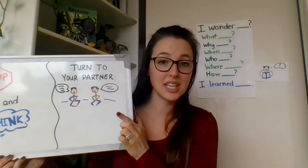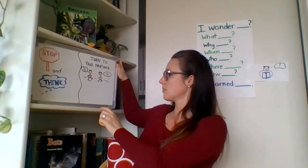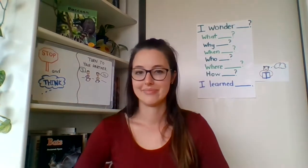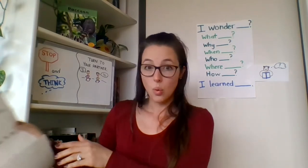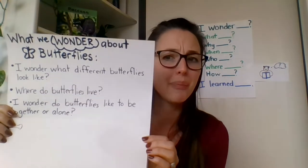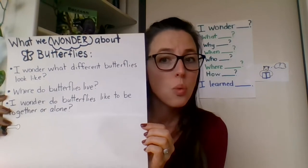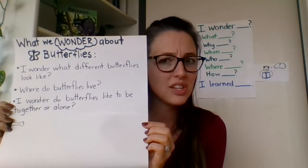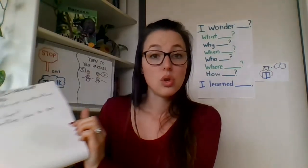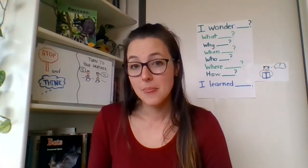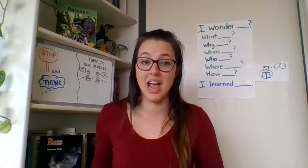Using your sentence stems, go ahead and share with your partner what you're wondering about butterflies. We had a few kids call in and they were wondering the following: 'I wonder what different butterflies look like.' Someone else wondered, using that 'where' stem, 'Where do butterflies live?' Someone else wondered, 'I wonder, do butterflies like to be together or alone?' We're going to use those questions and look for answers while we read our text today, and also come up with more questions while we read.